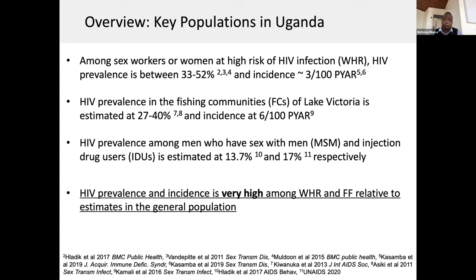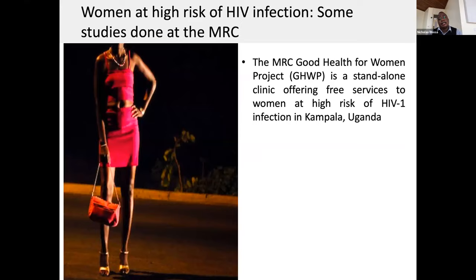That was just an overview of the key populations in Uganda. I'll now talk about some of the studies that have been done in women at high risk here at the MRC. At the MRC, we have the Good Health for Women project, which is a standalone clinic that offers free services to women at high risk of HIV infection in Kampala. I'll quickly highlight some of the findings from work done from that project.